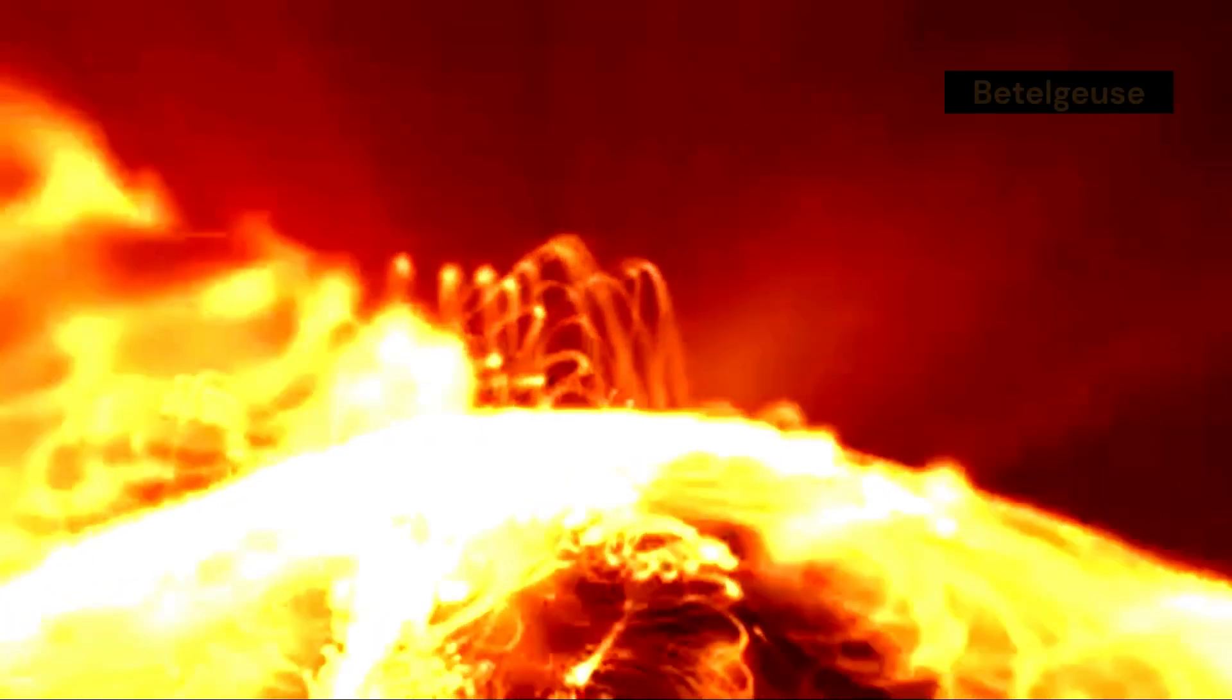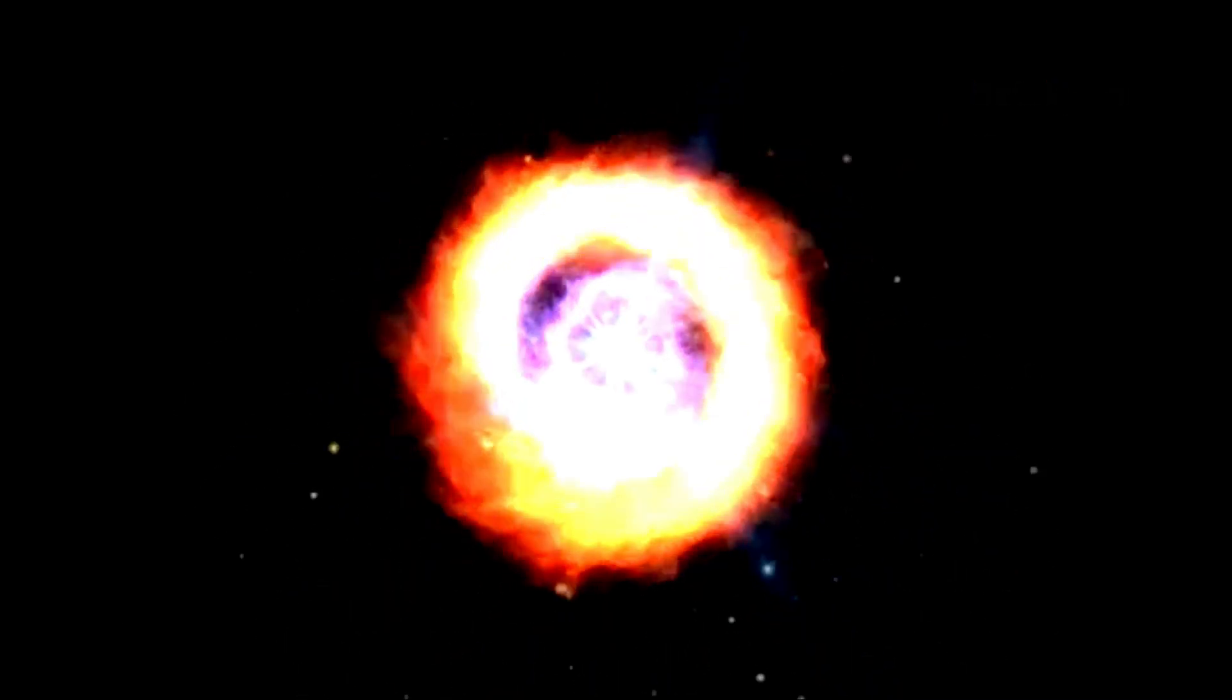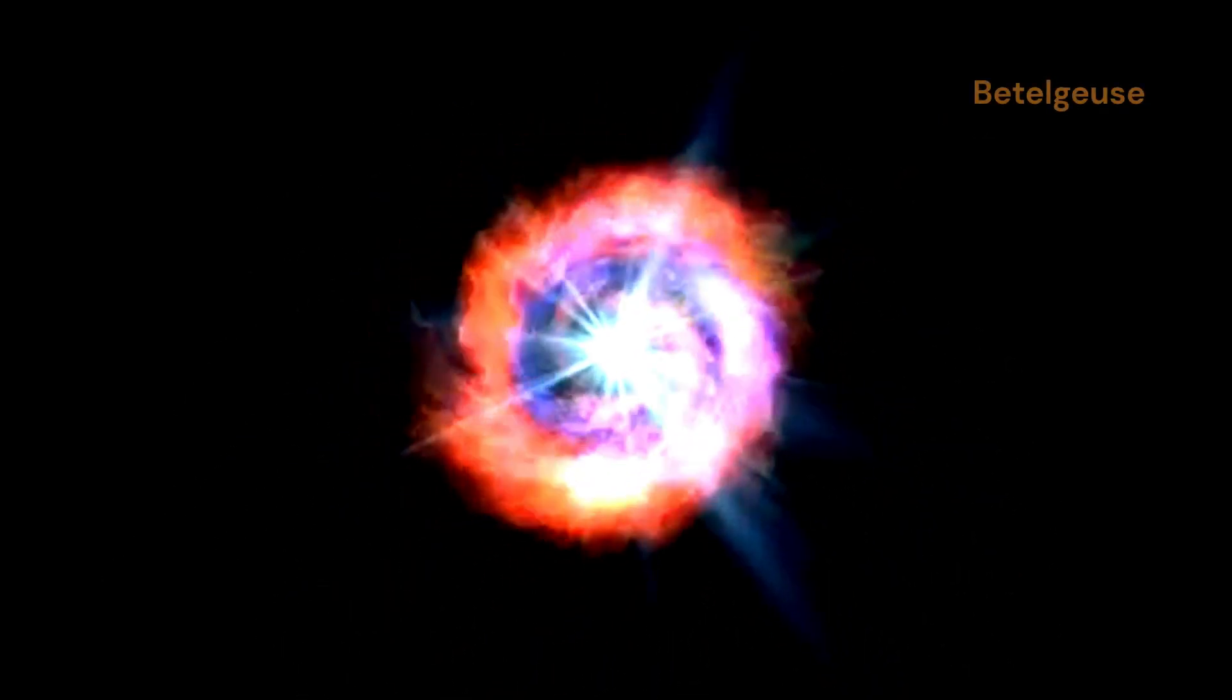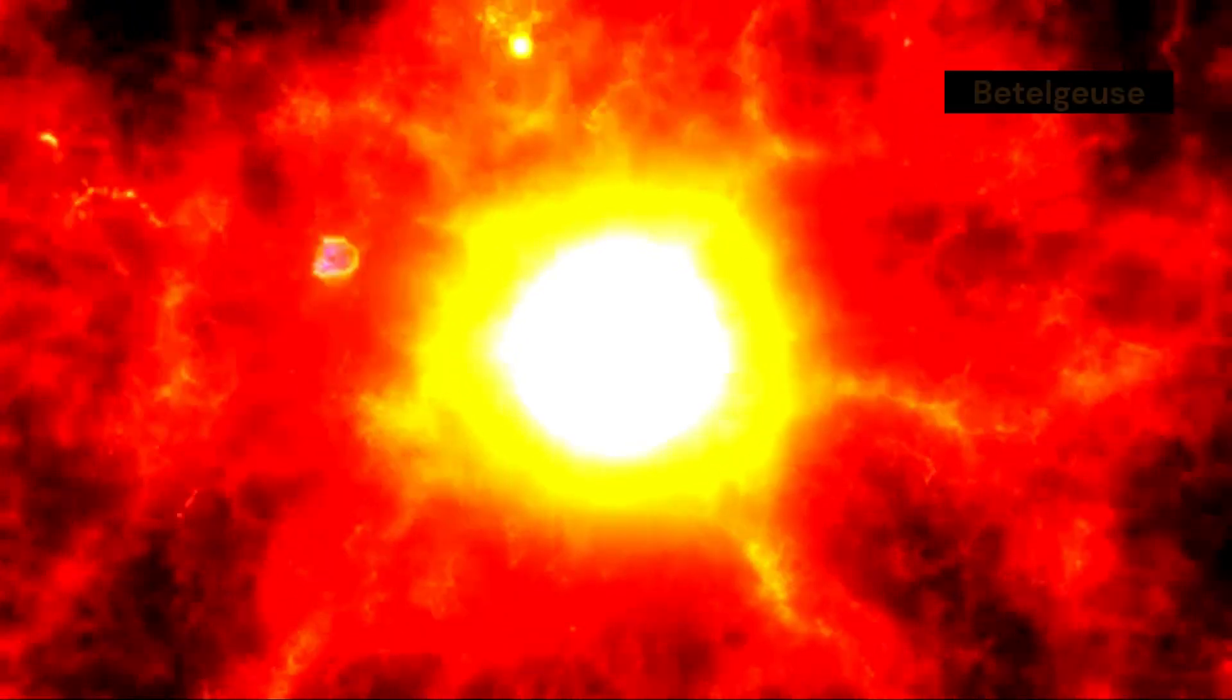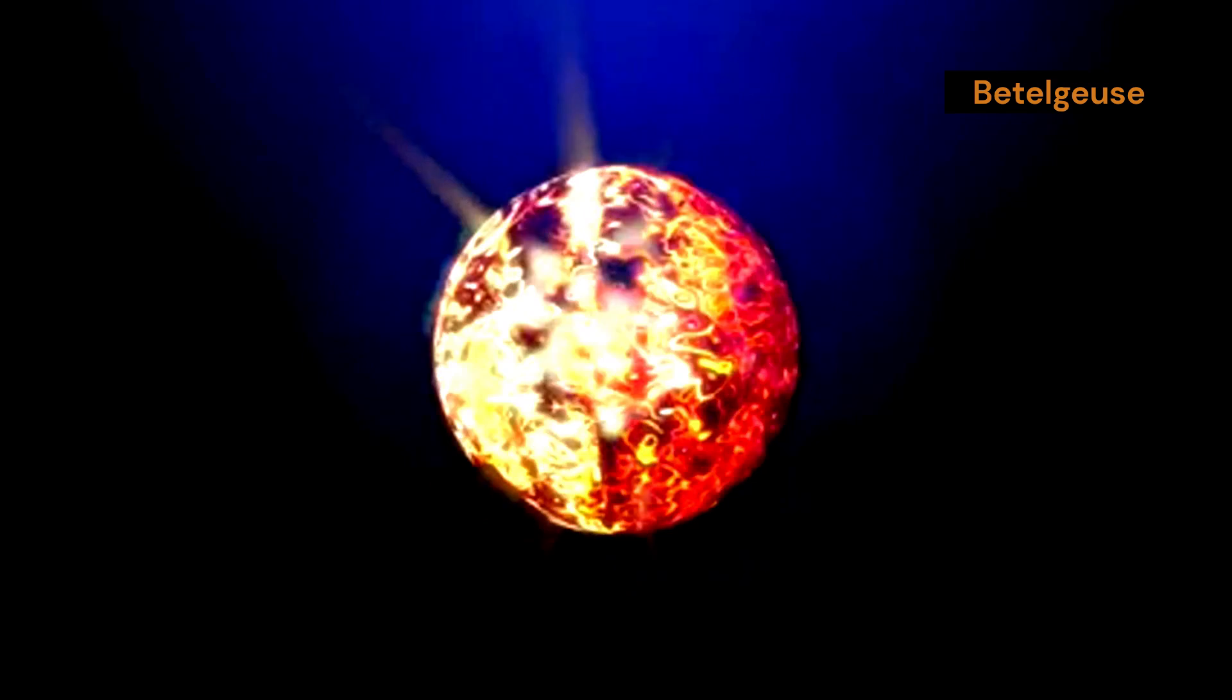Similar to solar flares but on a much larger scale. These stellar eruptions can launch massive amounts of material into space, creating spectacular displays of light and energy. If Betelgeuse experienced a large enough eruption, it could explain the observed surge in brightness. The ejected material, heated by the star's radiation, would glow brightly, adding to the star's overall luminosity.